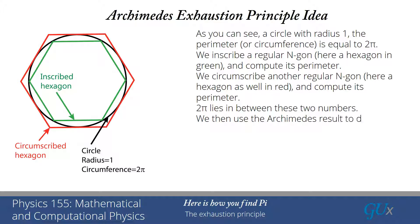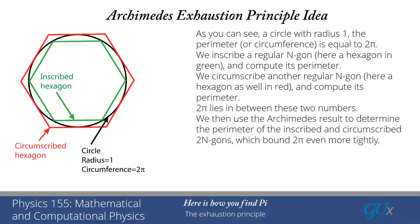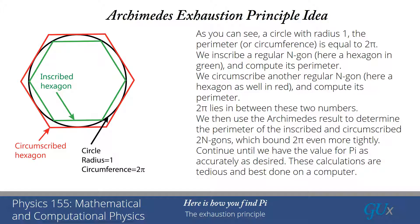We then use the Archimedes recursion relation to determine the perimeter of the inscribed and circumscribed 2n-gons, which bound 2 pi even more tightly. And then we continue, and we keep doing this until we have gotten the value for pi as accurately as is desired, however many digits it is that we want to determine. Now, these calculations are quite tedious, and they're best done on a computer. And actually, the way in which pi is calculated out to millions, if not billions of digits, is not by using this Archimedes exhaustion principle. There are other techniques that are used for it. But in principle, this method will work. It's just you would need to use very high-precision arithmetic to get a very large number of digits with this way of doing the calculation.